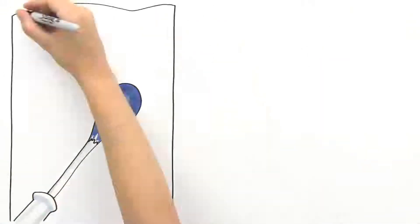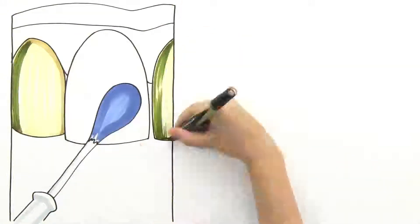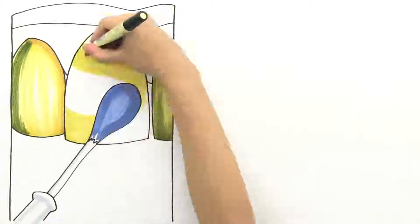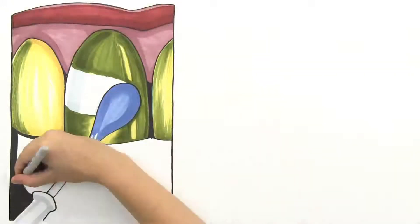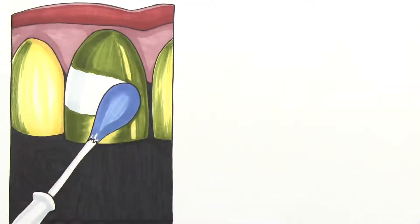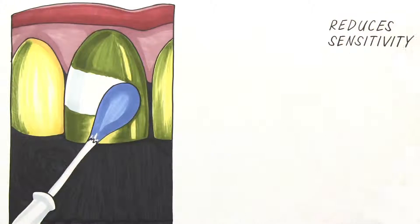The solution, Power Swabs. A teeth whitener that works in only 5 minutes to remove dark, yellowing stains from your teeth. And get this, Power Swabs has been clinically proven to reduce tooth sensitivity while whitening.